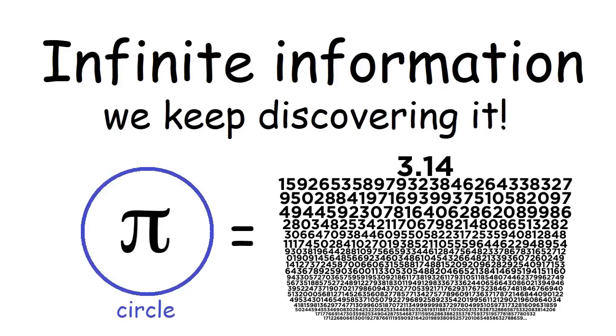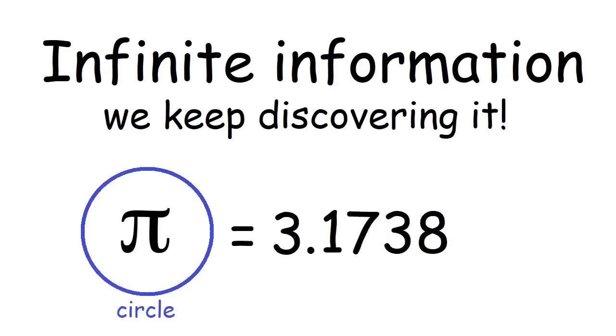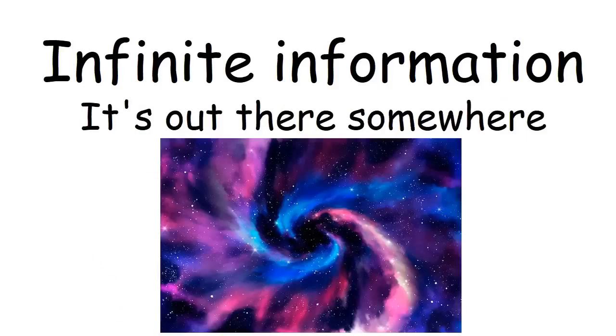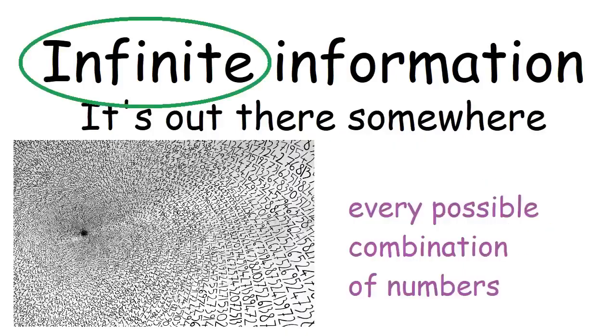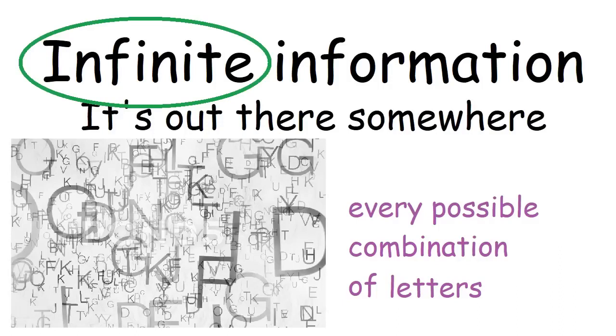If we were just making this stuff up, we could make pi be whatever we want it to be, but we can't do that because we know that that's not true. We know that all this information is out there somewhere, but it can't be in our physical universe because our universe is finite and math is infinite. That means math contains every possible combination of numbers, and if we use numbers as code for letters, then math contains every possible combination of letters as well.